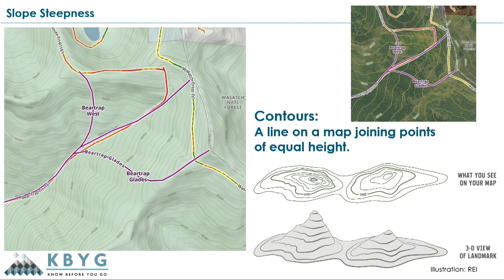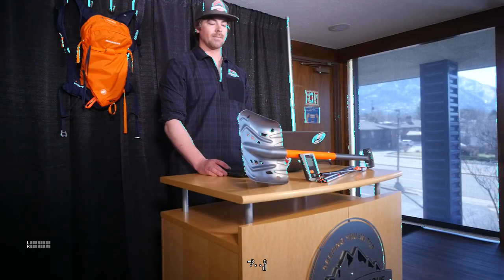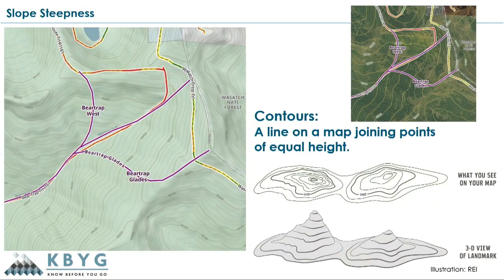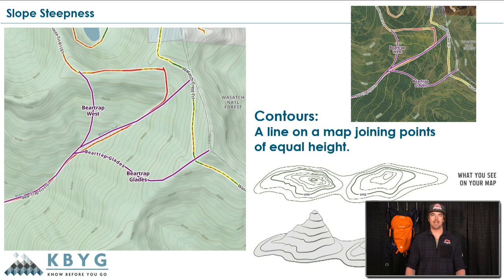When we talk about slope angle, we use tools on topographic maps to determine how steep a slope is — these are called contour lines. A contour is just a line on a map that joins points of equal height, so if you were to travel directly on a contour line, you wouldn't be gaining or losing elevation. When we look at topographic maps, we're looking for how tightly spaced those contour lines are. Contour lines squished close together means the slope is pretty steep; more spaced out indicates a gentler slope — those are areas I'm looking to ride, especially on high danger days.